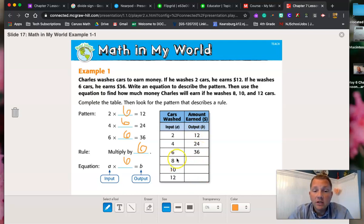So if I was doing the rest of this, if I were to do 8 times what is going to give me my next number? Well, that's 48. 8 times 6 is 48. And 10 times 6 is 60. And 12 times 6 is 72. And I filled in the rest of my chart.